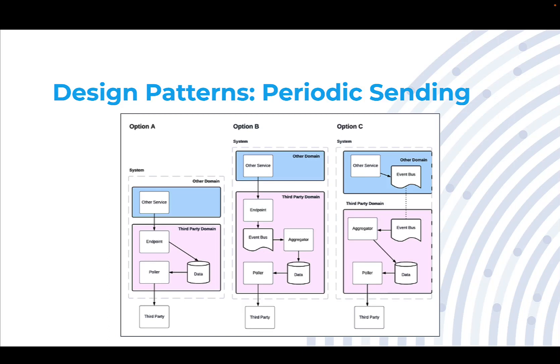In the previous example of just sending the data to the third-party system whenever we have it, consider that not every third-party system is capable of handling what could potentially be a very high load of data. So a strategy we sometimes use, especially when dealing with legacy systems or mainframes, is that we periodically send the data instead of just sending the data one element at a time as we get it.